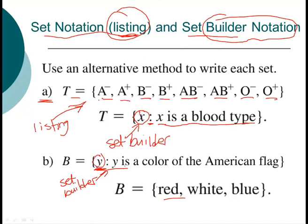So Y is the name of the variable such that Y is a color of the American flag. And so if you were told to list out those actual colors, you would say red, white, and blue. That's what the colors of the American flag are. So this is the difference between listing and set builder notation. We'll be reading back and forth between them.